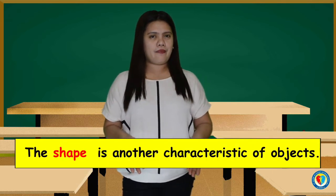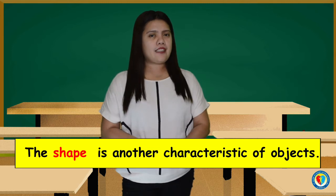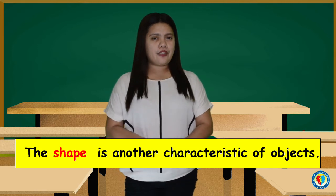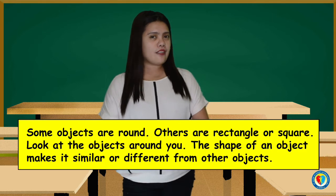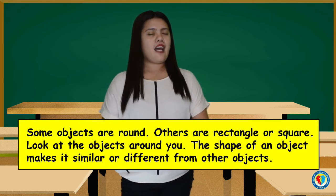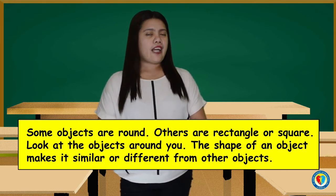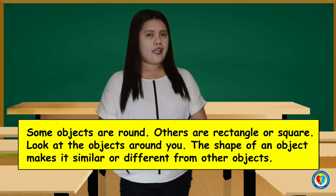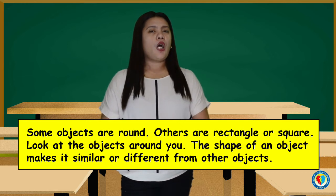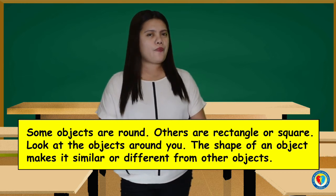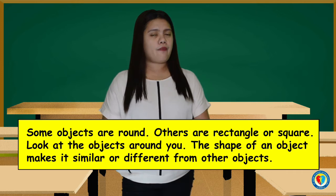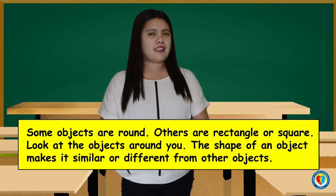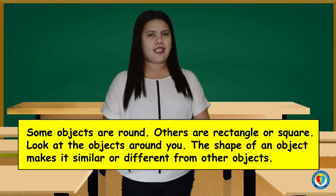Next, the shape. The shape is another characteristic of objects. Some objects are round, others are rectangle or square. Look at the objects around you. The shape of an object makes it similar or different from other objects.